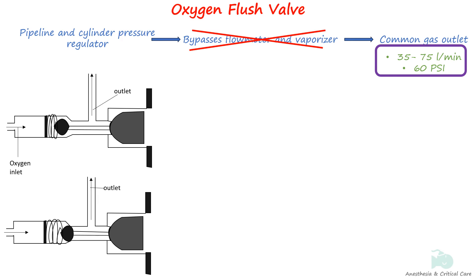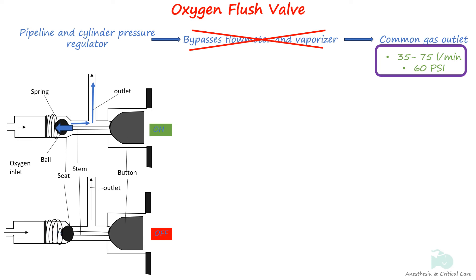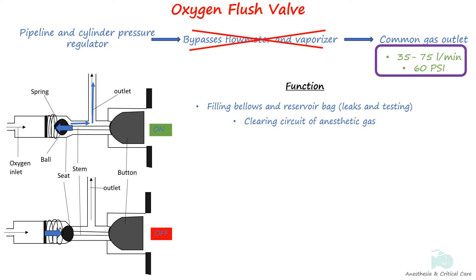The oxygen flush consists of a button and stem connected to a spring-loaded ball that is in contact with a seat. When the button is pressed, the ball is forced away from the seat, allowing oxygen to flow through the outlet. The spring opposing the ball closes the valve when the button is not depressed. The O2 flush is commonly used to recharge the bellows in case of a leak in the patient circuit, or to rapidly purge the patient circuit of anesthetic gases in the event of an overdose of anesthetic agent.